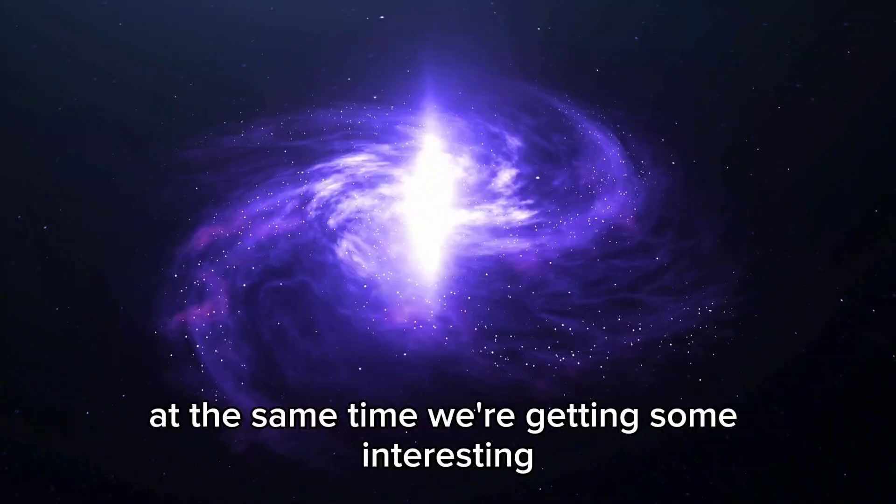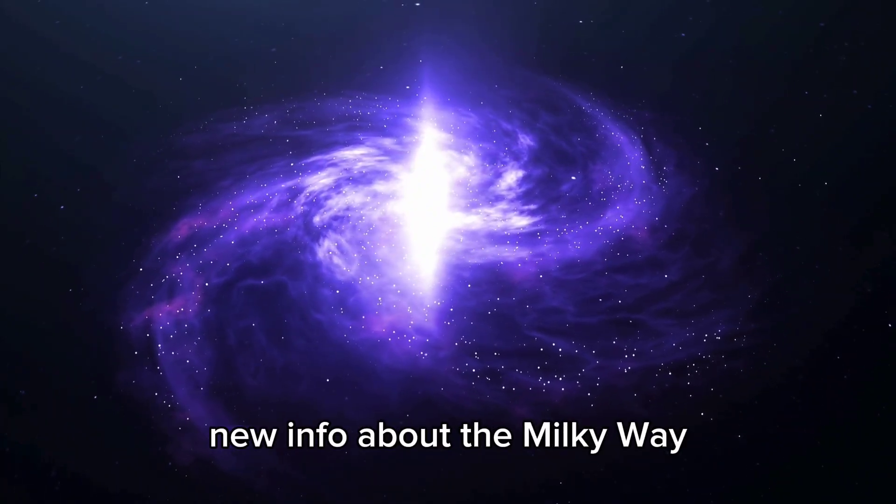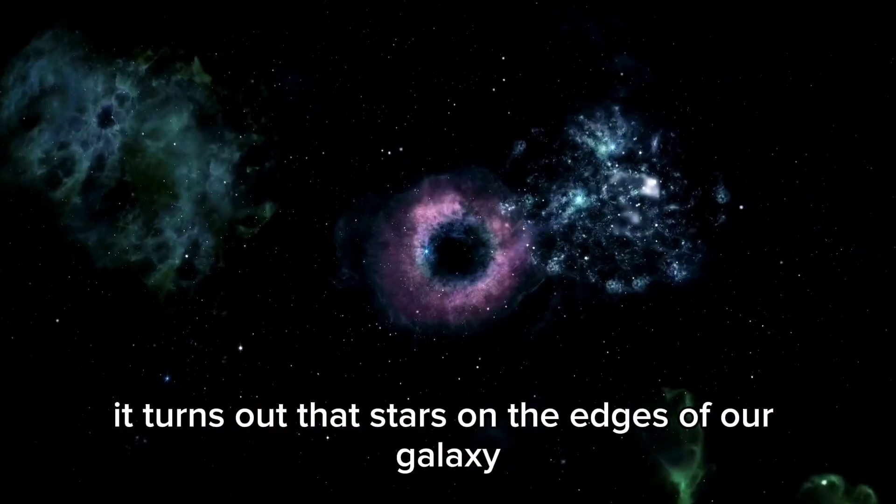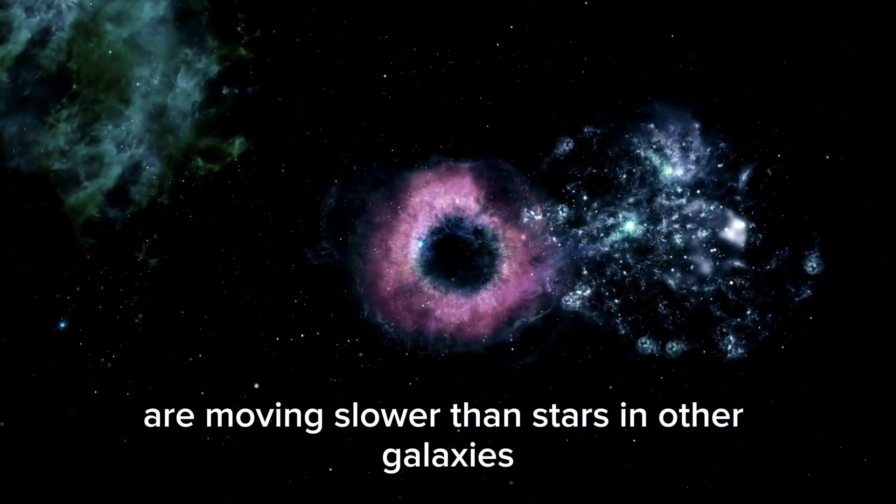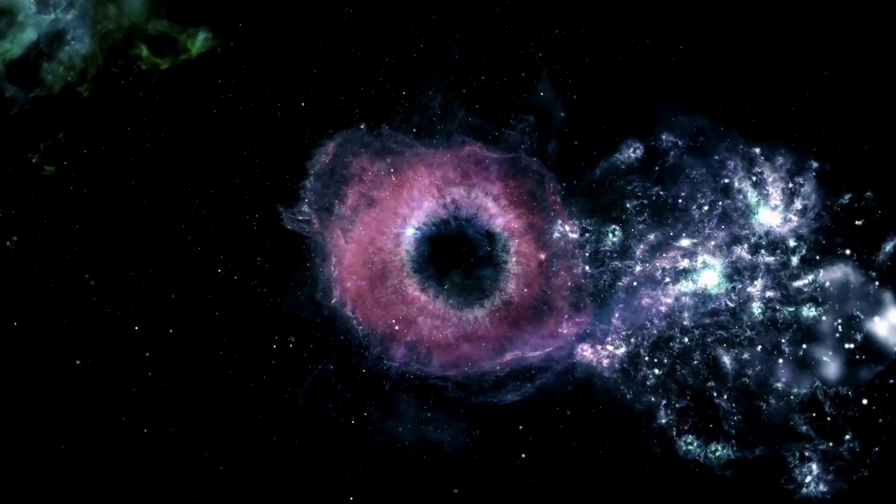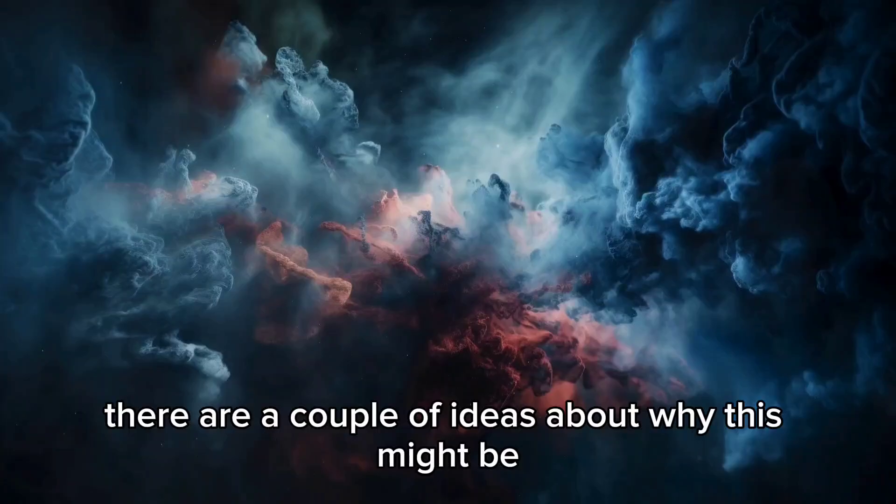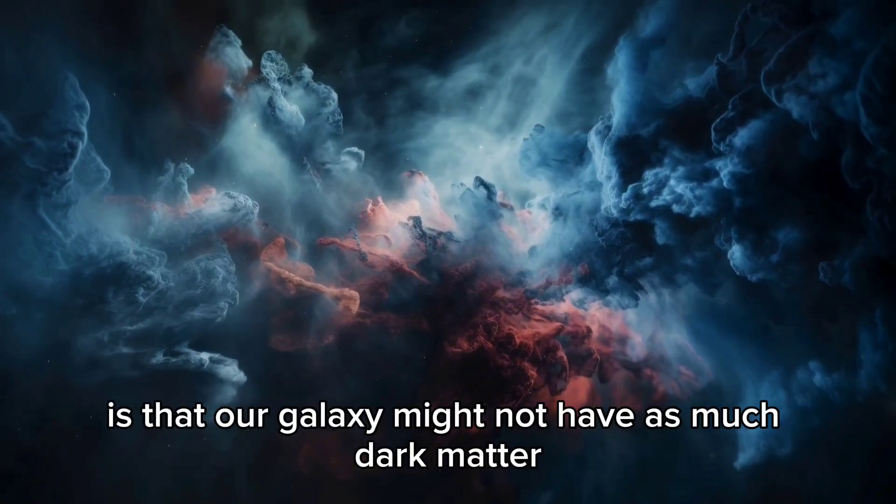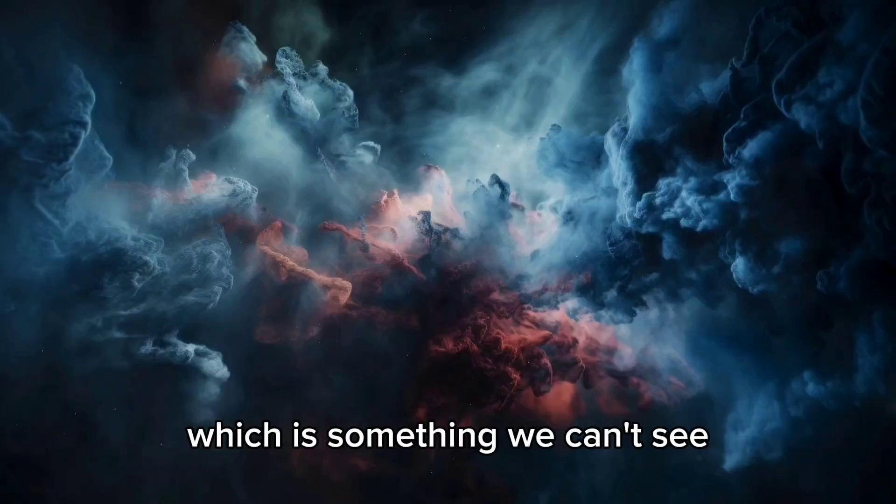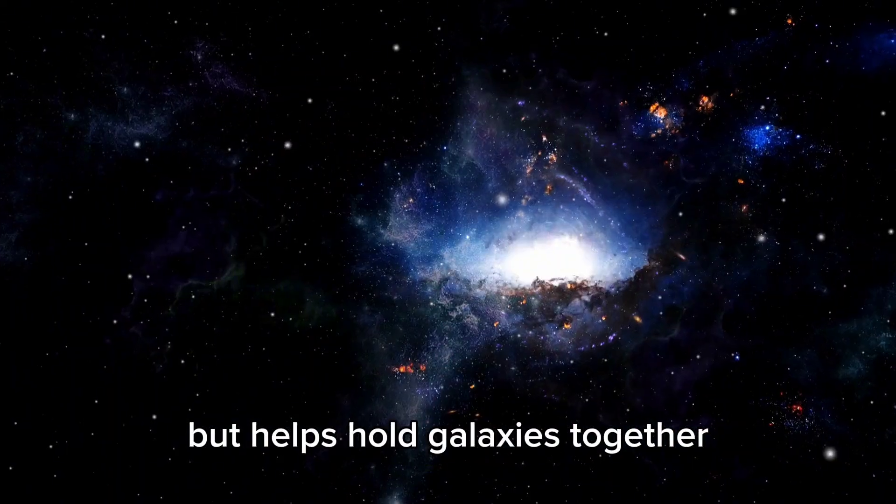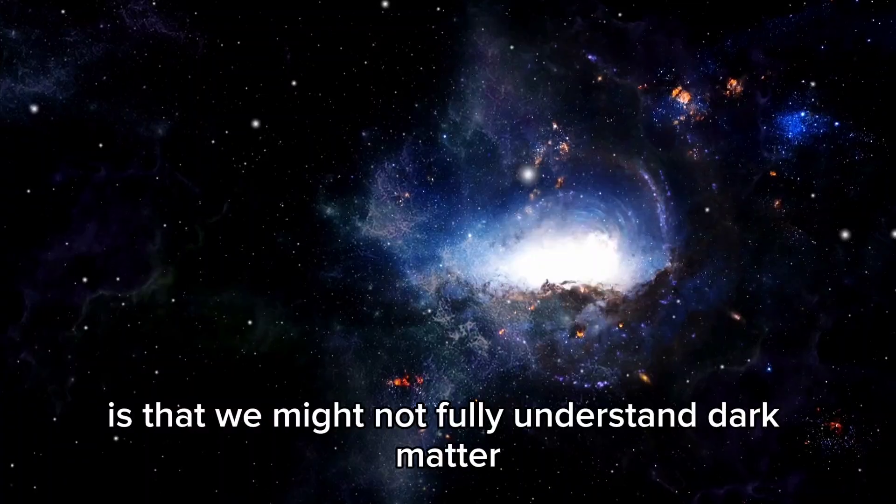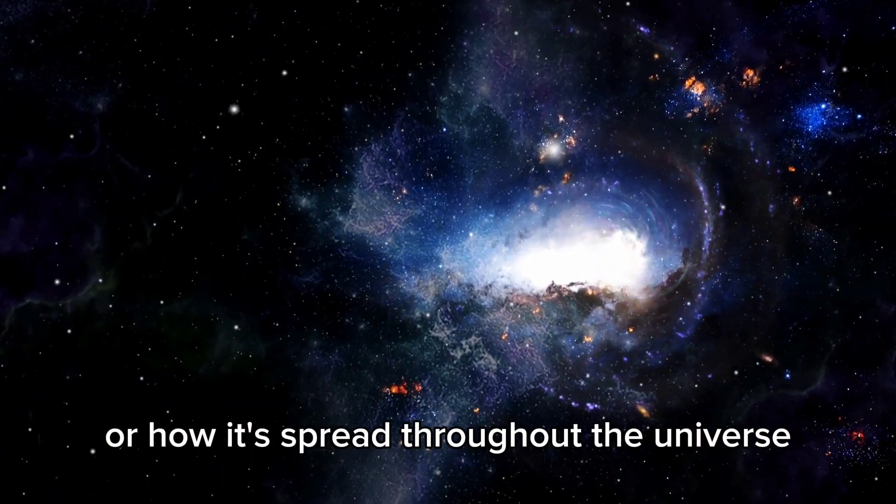At the same time, we're getting some interesting new info about the Milky Way. It turns out that stars on the edges of our galaxy are moving slower than stars in other galaxies. There are a couple of ideas about why this might be. One is that our galaxy might not have as much dark matter, which is something we can't see but helps hold galaxies together. Another is that we might not fully understand dark matter or how it's spread throughout the universe.